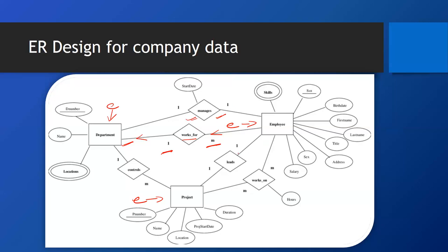Two people cannot lead a single project, so one person leads a project. Additionally, multiple persons can work on a project and they can work on multiple projects. For example, Puneet is working on three projects and Rahul is working on two projects. So an employee can work on multiple projects — this is a many-to-many relationship.